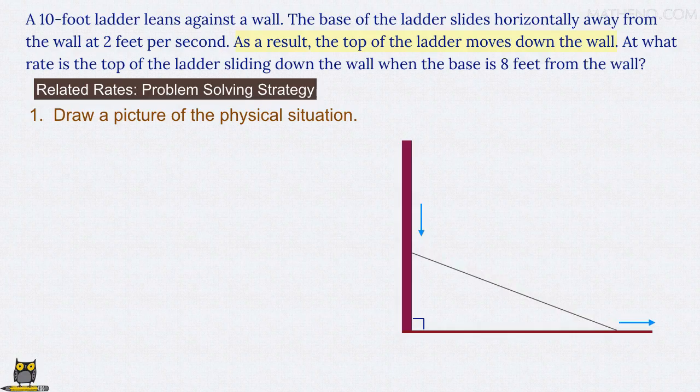Now, of course, if the ladder slides along the ground faster instead, then it slides down the wall more quickly too. The rate at which it slides horizontally is thus somehow related to the rate at which it slides down vertically, and our job will be to find that exact relationship.